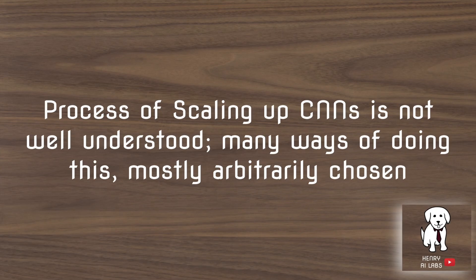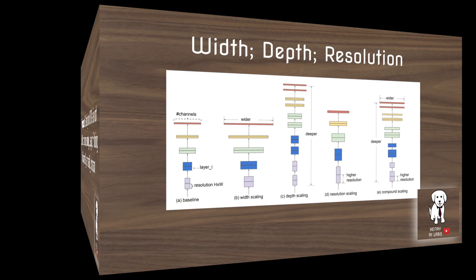The process of scaling up CNNs isn't well understood and there are many ways of doing this chosen arbitrarily. This means randomly selecting to double the layers in your network, randomly picking certain filters to double the width of their feature maps, or just randomly deciding to increase the input resolution of images to the network.